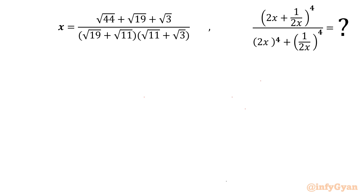Welcome back to Infigyan, my dear friends. Today in this video we are going to take up another challenging question from Radical Mathematics. Here x is given as square root of (44 + √19 + √3) over (√19 + √11)(√11 + √3). We have to evaluate the expression E = (2x + 1/2x)^4 over (2x)^4 + 1/(2x)^4.